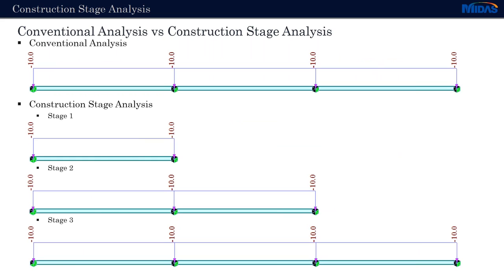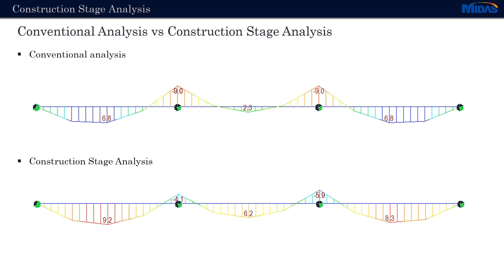In a construction stage analysis, in stage one we can activate the first part of the structure with its loadings, in the second stage the second span, and in the third stage the third span. When we look at the results, it is clear that with a construction stage analysis some critical effects may occur in elements that have not been identified in the conventional analysis. This is very important and has to be considered in the design.